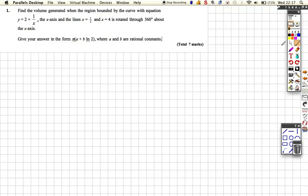Okay, so this is the first question in a series of questions to help us revise about integration. The question says find the volume generated when the region bounded by the curve, the x-axis and the lines x equals 1 half and x equals 4, is rotated through 360 degrees.